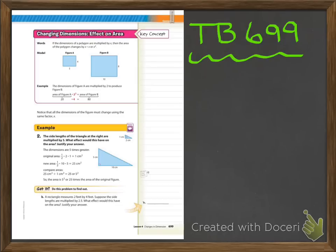Now you're looking at textbook page 699. The relationship between changes in dimensions and the effect on perimeter is straightforward: if you multiply all the sides by three, the perimeter is multiplied by three. If you divide all sides by six, the perimeter is divided by six. As long as you change each side length by the same amount — multiplying by six, five, or three — the perimeter is also multiplied by that same number.